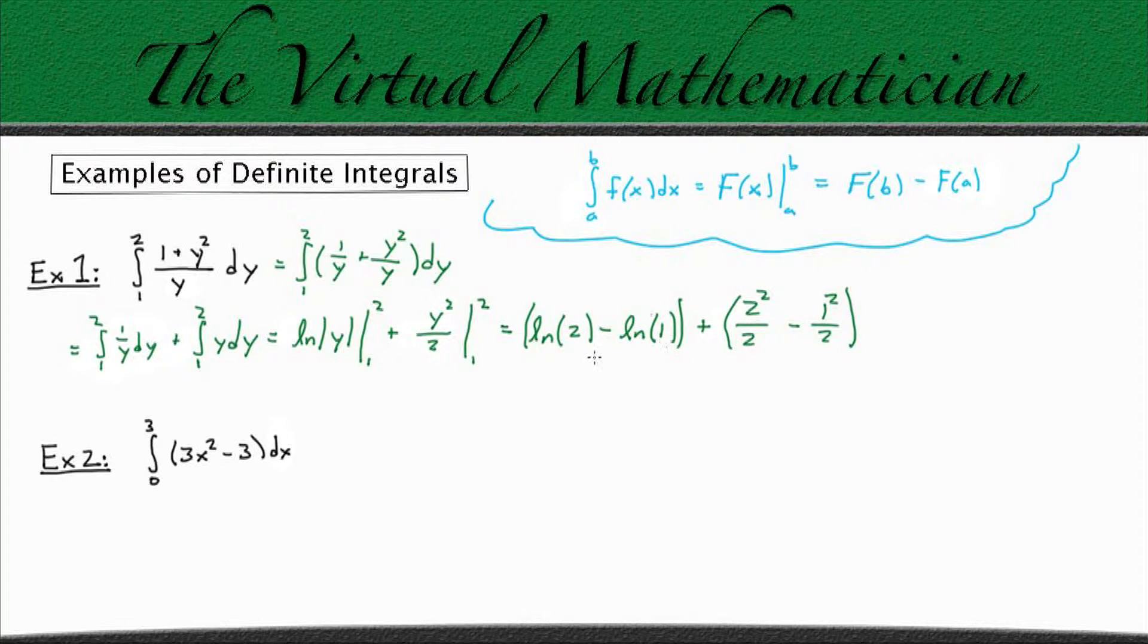Using algebra we can combine these two terms and rewrite that as the natural log of 2 over 1. And if you're wondering why I dropped the absolute value bars, it's because I know we're evaluating this at 2, and 2 is positive, so it's defined.